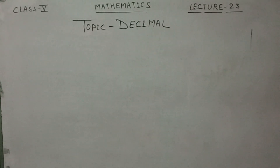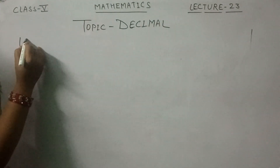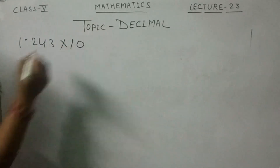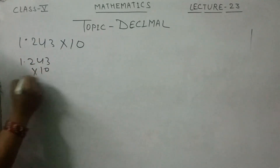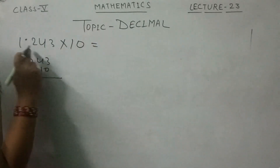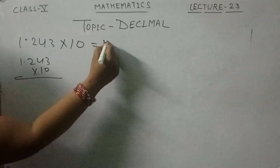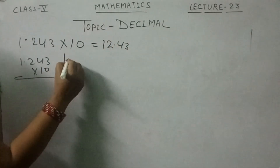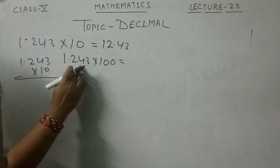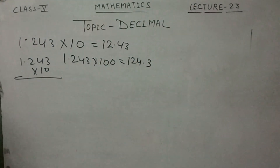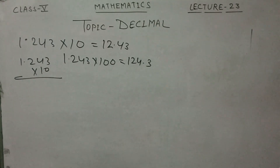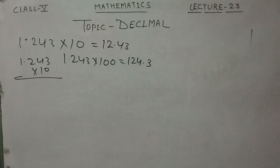One simple multiplication shortcut: for 1.243 multiplied by 10, no need to do full multiplication — just move the decimal one digit to the right: the answer is 12.43. If you multiply by 100, move the decimal two digits to the right: 124.3. Decimals mean one tenth of the given number.